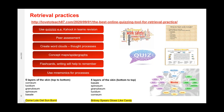The use of mnemonics is brilliant. For example, the five layers of the skin from top to bottom — corneum, lucidium, granulosum, spinosum, basale — can be remembered with 'Come Let's Get Some Bacon.' From bottom to top: basale, spinosum, granulosum, lucidium, corneum — 'Britney Spears Glows Like Candy.' Learners love this kind of learning where they can create their own mnemonics. It's a great hint and tip for retrieving information.